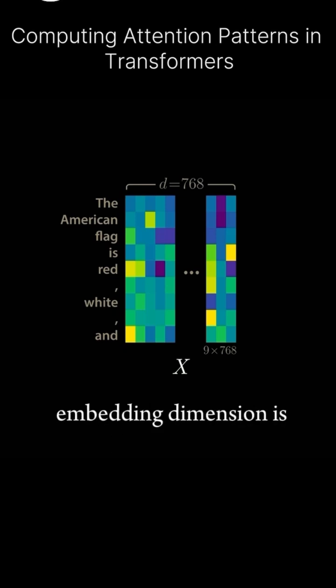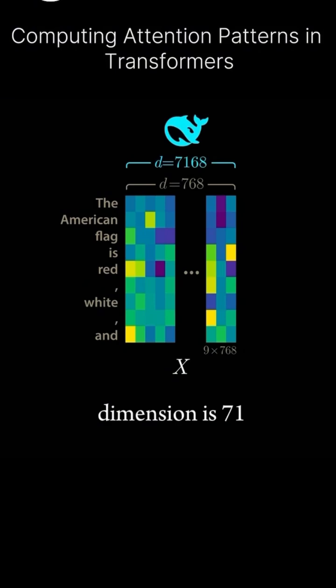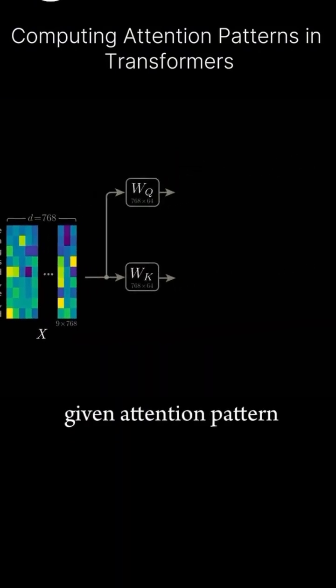GPT-2-small's embedding dimension is 768, and DeepSeq-R1's embedding dimension is 7168.